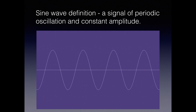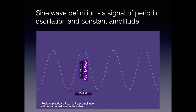A simple waveform to look at is going to be a sine wave. A sine wave by definition is a signal of periodic oscillation in constant amplitude. You can see on the waveform here I've drawn in what the amplitude would be — it's basically the height from top to bottom. And we've got the period of the waveform as well. This is a very simplistic waveform and we're going to dive into some of the details of a sine wave.